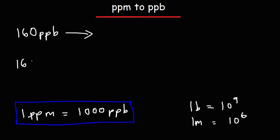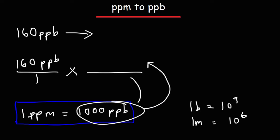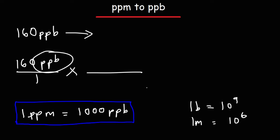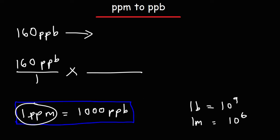So we're going to start with what we're given, 160 parts per billion over 1, and we're going to use this conversion factor. So what should we put on top and what should we put on the bottom? Now we want the units ppb to cancel, so we want ppb to be on the bottom. So we're going to put this part on the bottom. This is going to go on top.